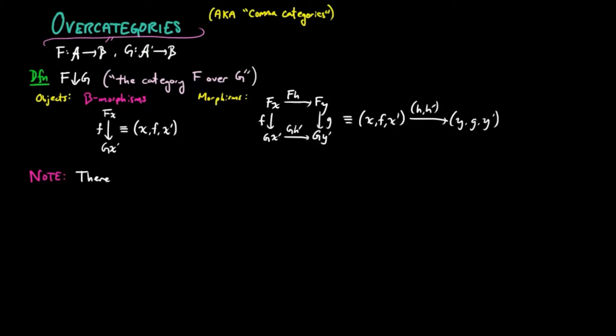Then we note that there is a functor u from f over g to the product category of a and a prime, which takes an f over g object xfx prime to xx prime, and an f over g-morphism h, h prime to h, h prime.